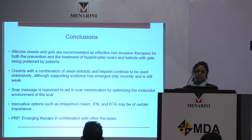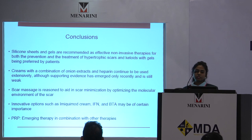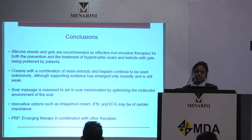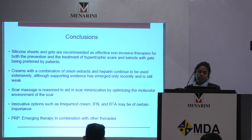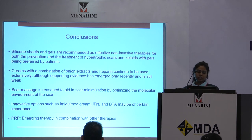To conclude, silicone sheets and gels are recommended as effective non-invasive therapy and are still considered first-line treatment. Creams with combinations like onion extract, heparin, and allantoin have been used widely, though the evidence is still weak. Scar massage is crucial and has to be started after wound healing. Innovative options like imiquimod, interferon, and botulinum toxin may be of certain importance and can be promising therapeutic options in the future. PRP is an emerging therapy and can be combined with other therapeutic options to get desired results.